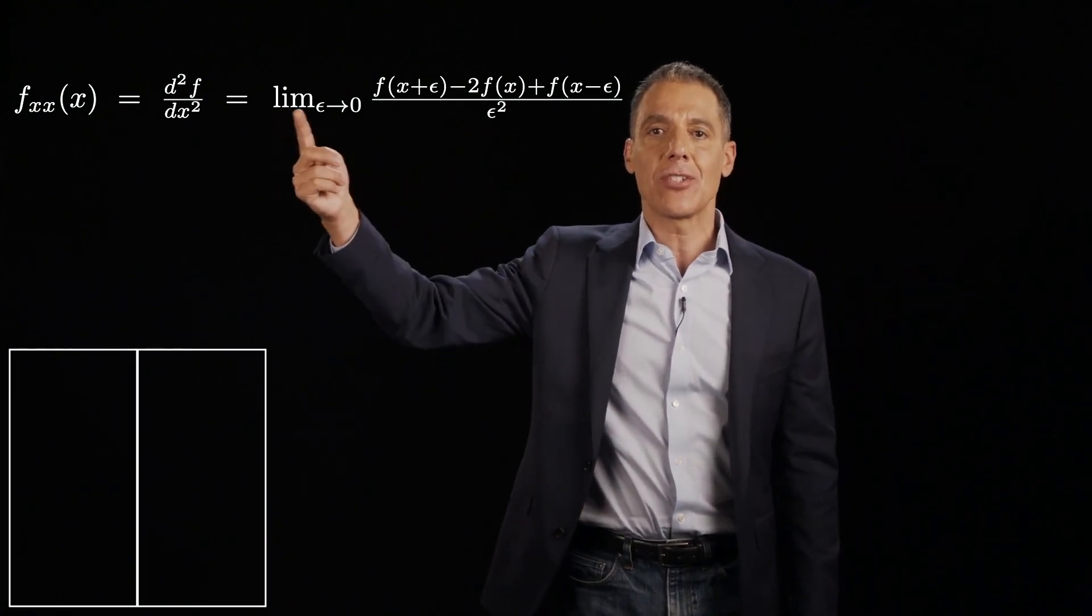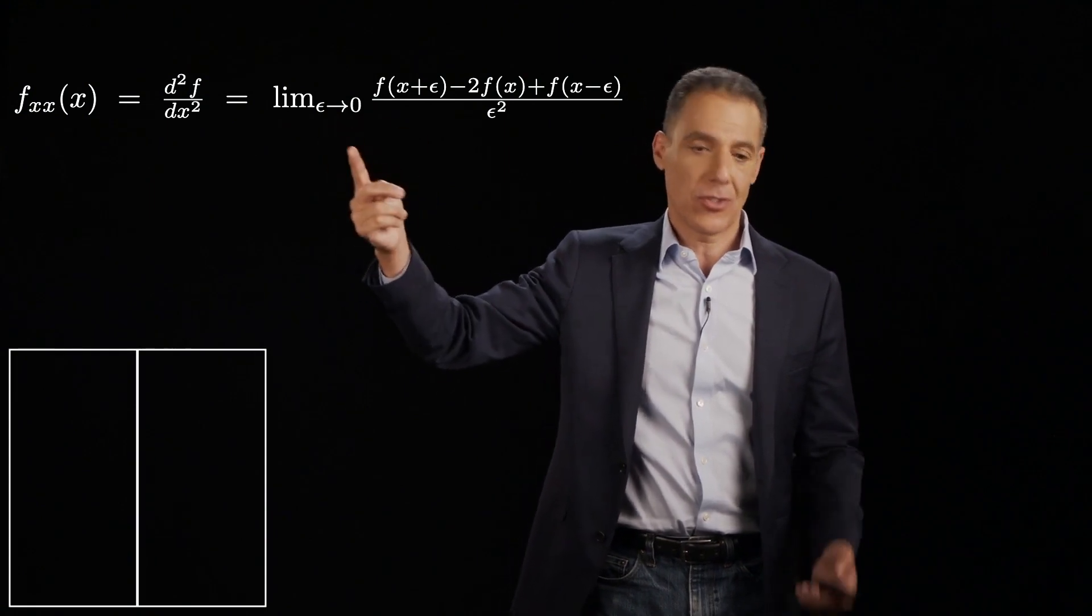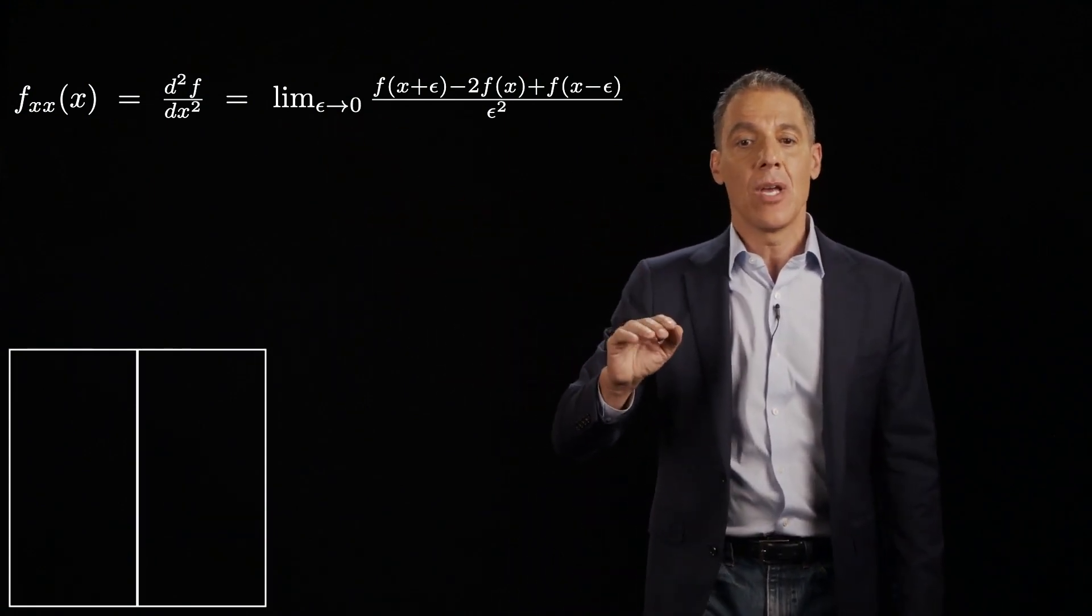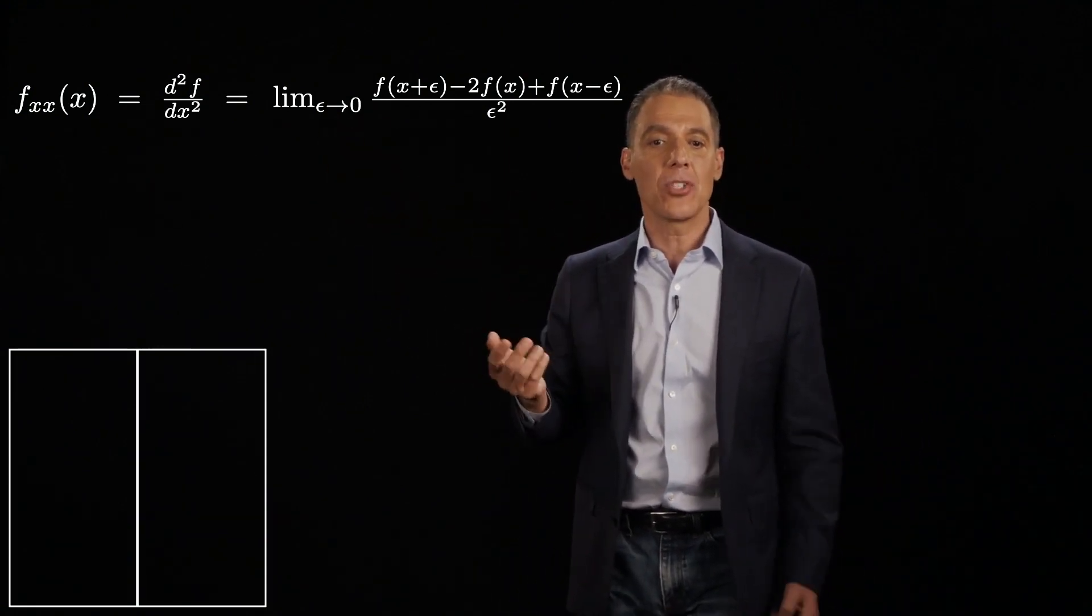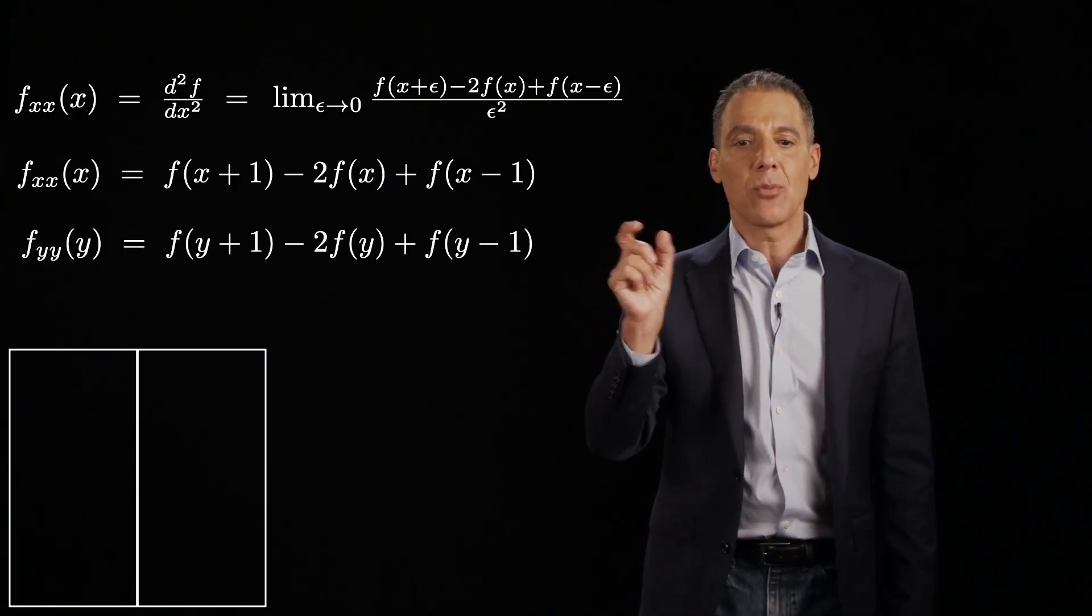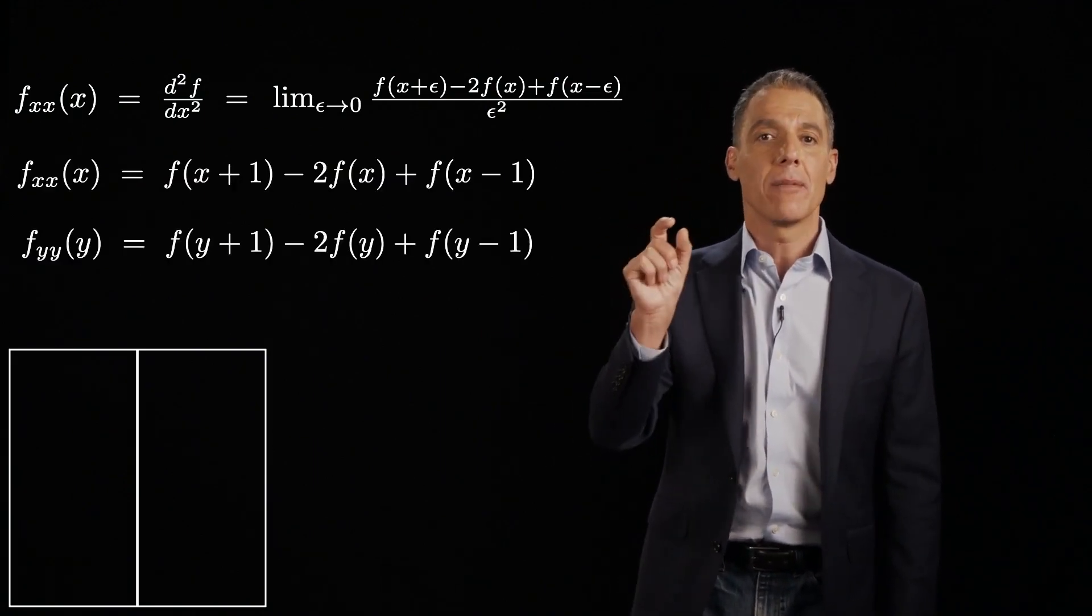Now, obviously, I'm still doing this as the limit approaches zero, which I can't do. But I can do an approximation to it, which is what happens when the limit approaches 1, my pixel density.